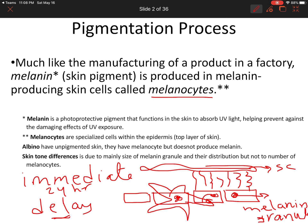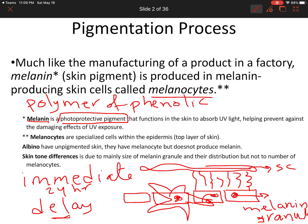Delayed tanning reaches its maximum after three weeks, depending on the keratinization process. Melanin is a photoprotective pigment — it is a polymer of phenolic compounds. Its function is to protect our skin from the damaging effects of UV light. Without melanin, our skin would not be protected from UV damage, and we could get cancer or burns.